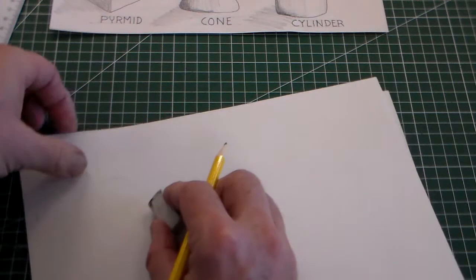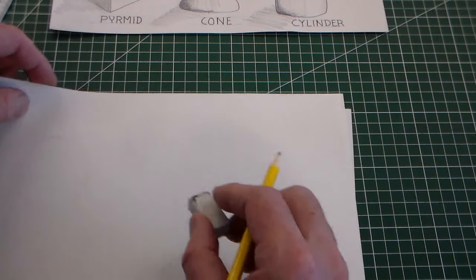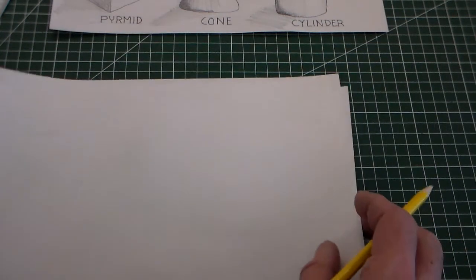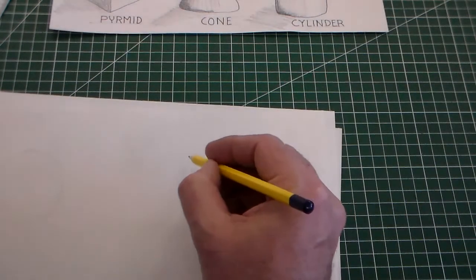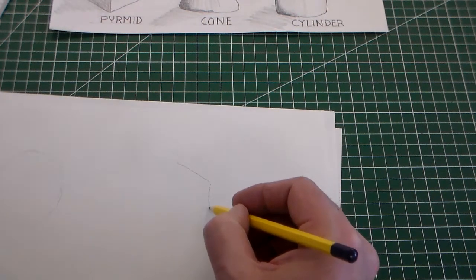Now if like me you make a little bit of a mistake, if you've drawn it lightly you can see there that I've drawn it lightly, I made a slight mistake and I've been able to rub it out.